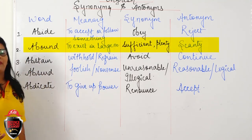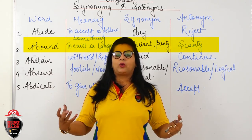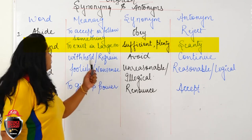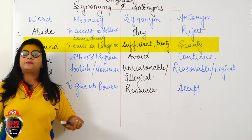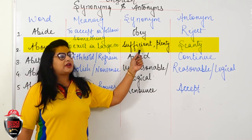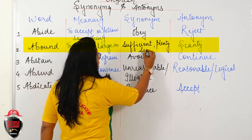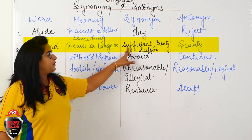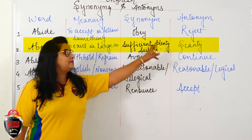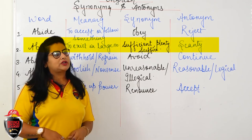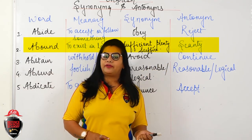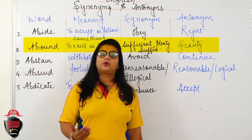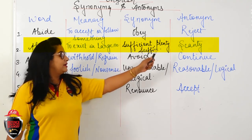Next word: Abound. Abound means to be available in large quantity — zyada quantity mein available hona. Synonyms: Sufficient, Plenty, Suffice. Antonym: Scanty. You have heard 'scanty' in geography — scanty rainfall, scanty resources — meaning less than required. Sufficient means more than enough; scanty means much less. So sufficient/suffice/plenty are synonyms of abound, and scanty is the antonym.